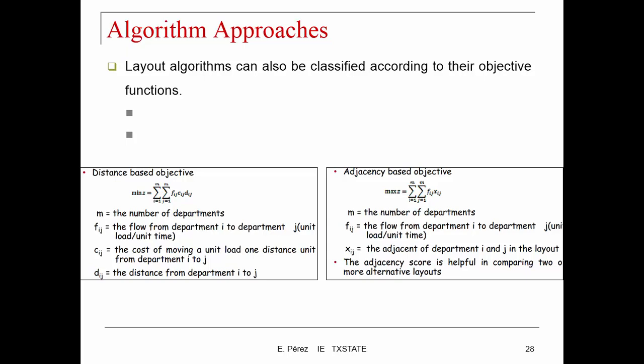Most layout algorithms can be classified according to the type of input data they require, including qualitative flow data such as relationship charts, and quantitative flow data such as a flow matrix expressed as a from-to chart. Some algorithms accept both. Layout algorithms can also be classified according to their objective functions — for example, minimizing cost, maximizing profit, minimizing time or distance, minimizing the sum of flows times distances, or maximizing the adjacency score.